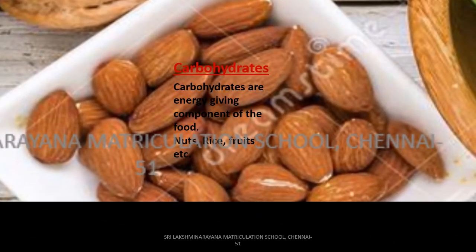Let us learn a type of nutrient that is carbohydrates. Why do we need carbohydrates children? Because carbohydrates are energy giving component of the food. Carbohydrate is found in food types like nuts, rice, fruits etc. Carbohydrate is of three forms: sugar, starch and dietary fiber. The food types that come under sugar are fruits, honey, cane sugar and beetroot.